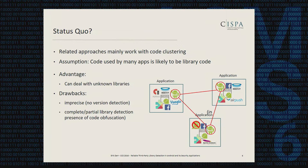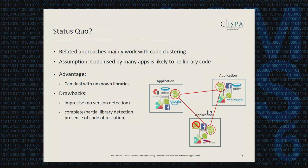What is the current status quo in detecting libraries? There are a couple of related approaches available, but they mainly work on large-scale code clustering. The idea is that when applications share code parts or fragments, the assumption is that these are likely library code, because app developers typically don't share their code. The main advantage of these approaches is that they can deal with previously unknown libraries and do not require any prior knowledge.